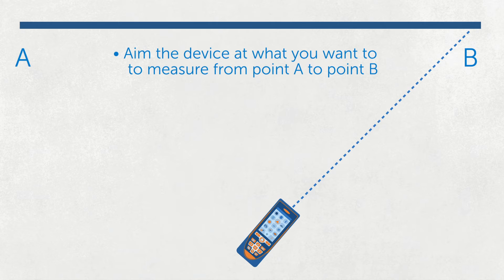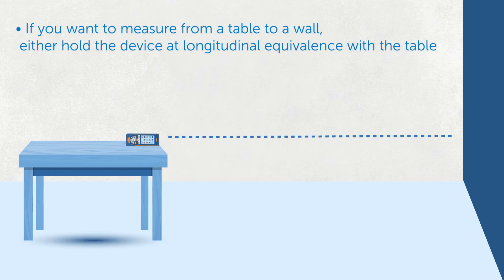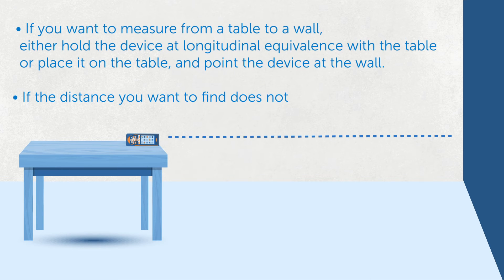If you want to measure from a table to a wall, either hold the device at longitudinal equivalence with the table or place it on the table and point the device at the wall. If the distance you want to find does not have two physical points, you can use objects to aim at instead.